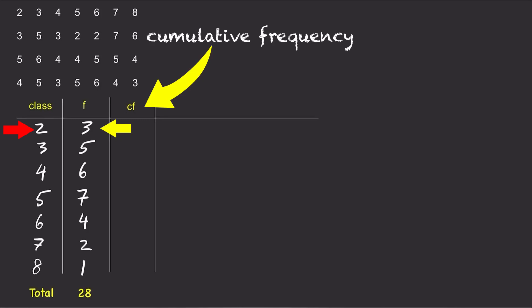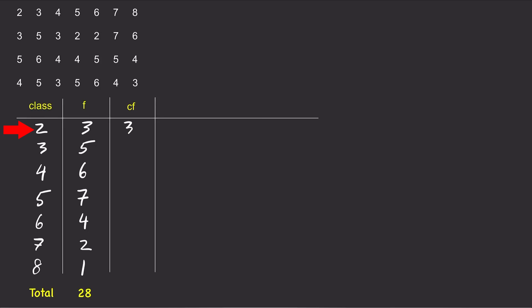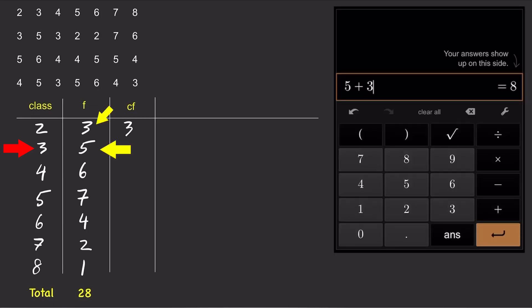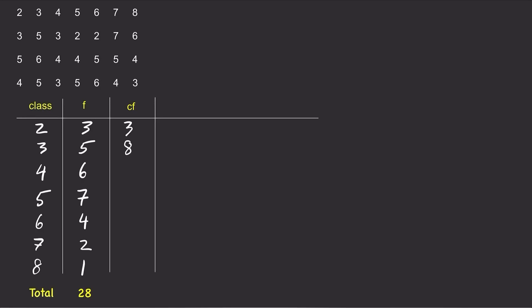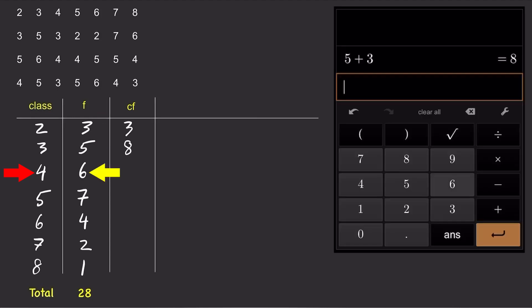There are no other classes before it, so the cumulative frequency is 3. For the second class, the frequency is 5, plus all the frequencies for every class that came before it, so the cumulative frequency is 5 plus 3 equals 8. For the third class, 4, the frequency is 6 plus all previous frequencies, so the cumulative frequency is 6 plus 8 equals 14.